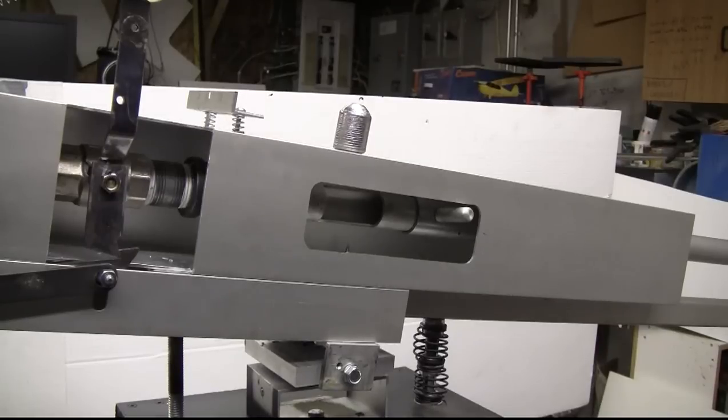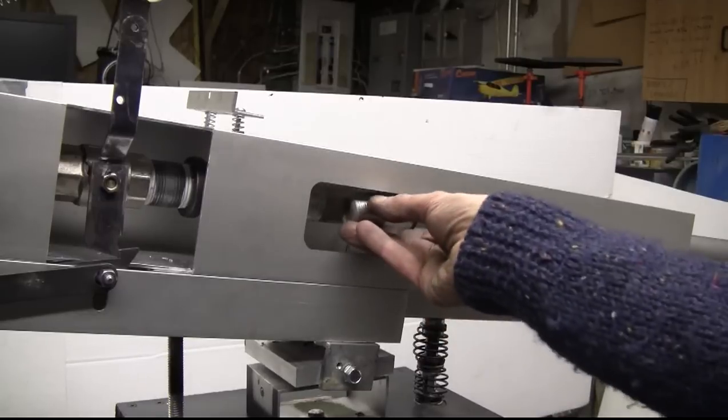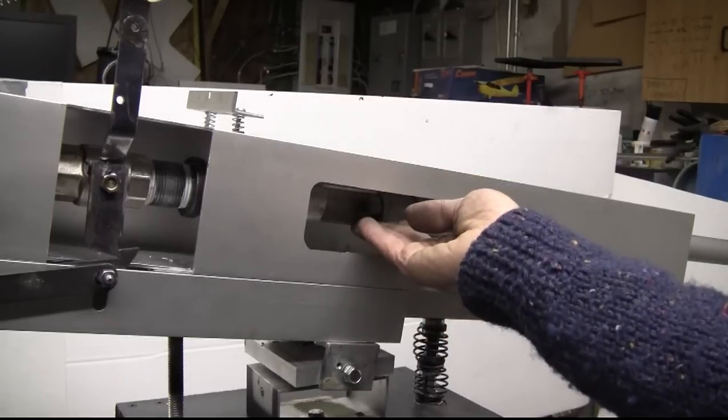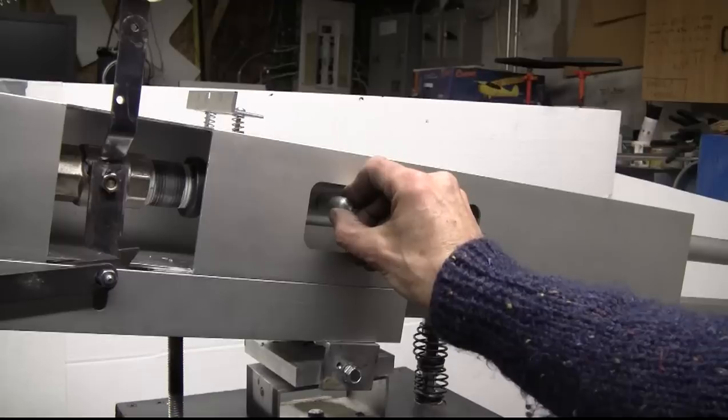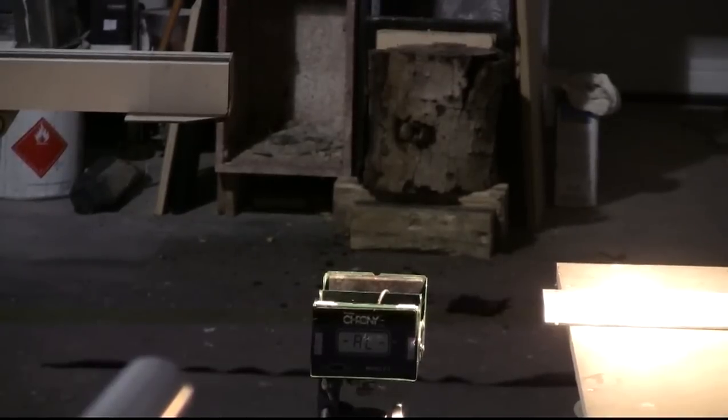Here we'll load a 2,613 grain test slug for our first firing. Target is a fire log, about 14 inches in diameter. Firing pressure for this first test shot is 300 psi. Projectile is a lead slug, weighing 2,613 grains, and fire!